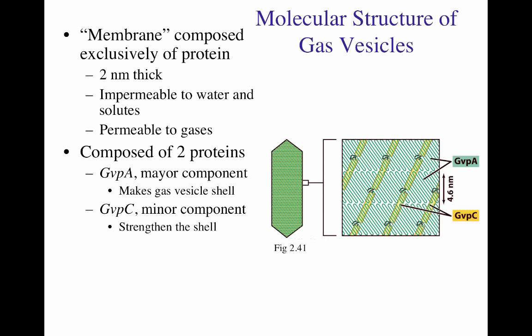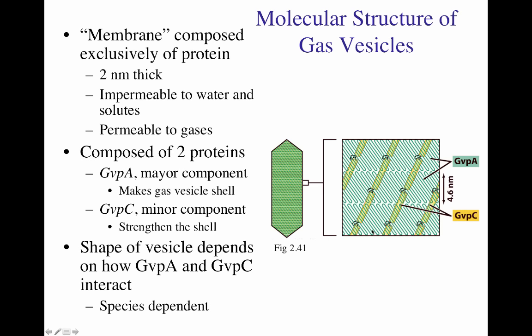In many bacteria where these have been studied, gas vesicles are composed of two different proteins. GVP-A is the major component and makes the gas vesicle shell. GVP-C is the minor component, providing strength for the shell. The shape of the vesicle is genetically encoded and depends on the GVP-A and GVP-C interaction, which is species-dependent. So though the function of the gas vesicle in many different microorganisms is the same, the shape will be different depending on the proteins GVP-A and GVP-C.